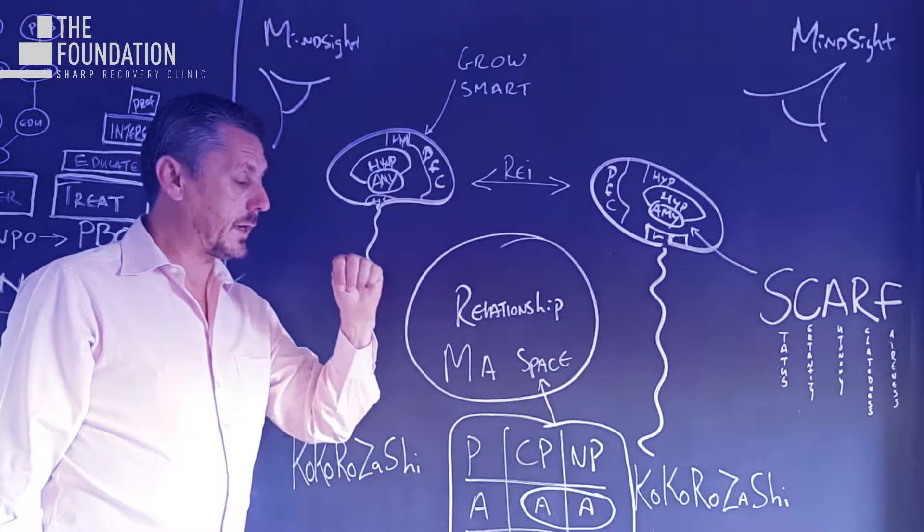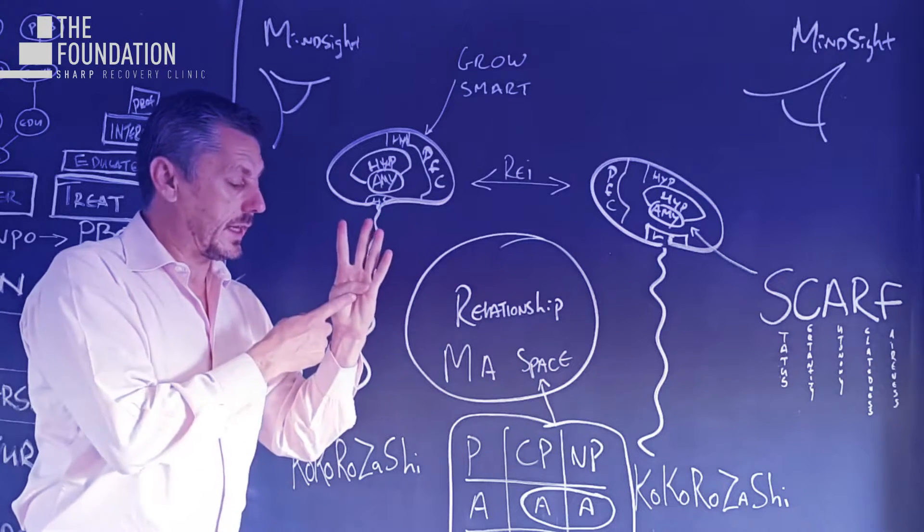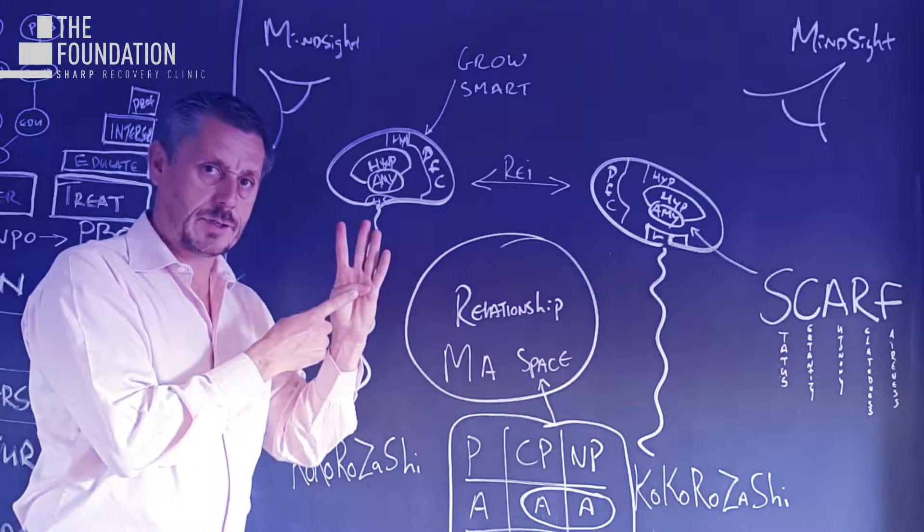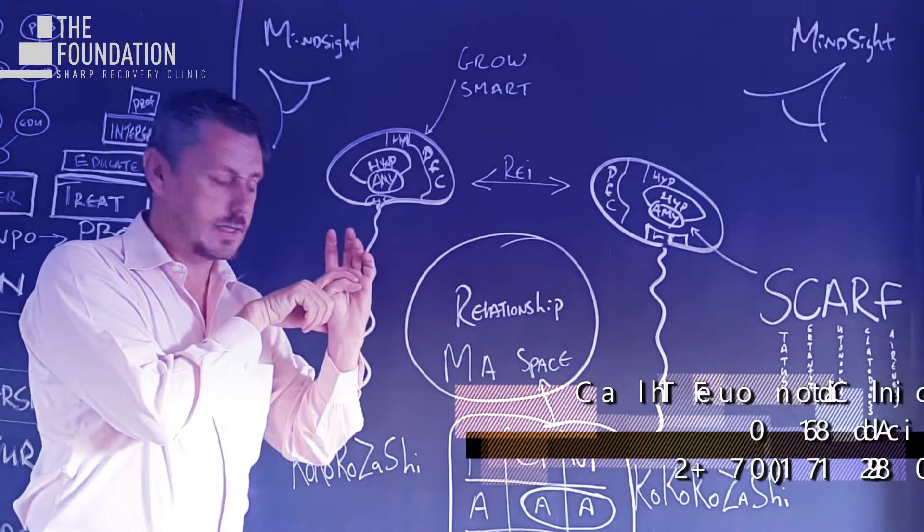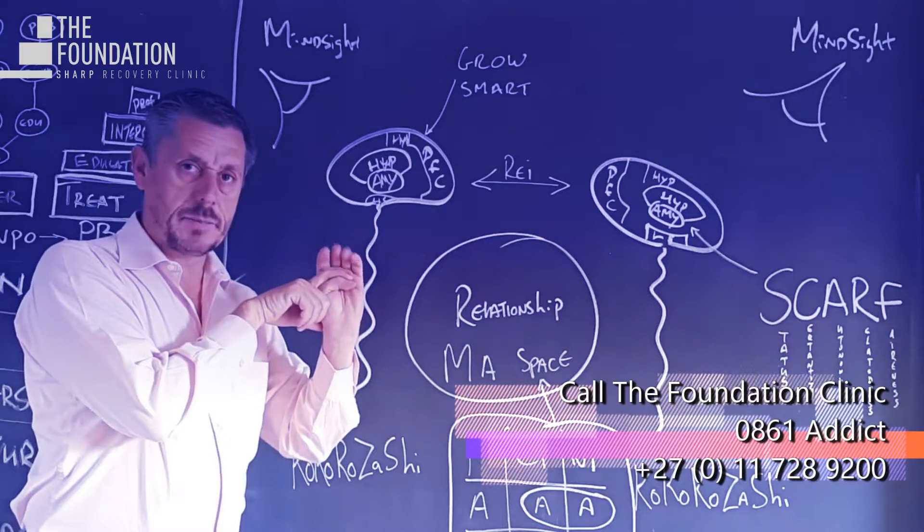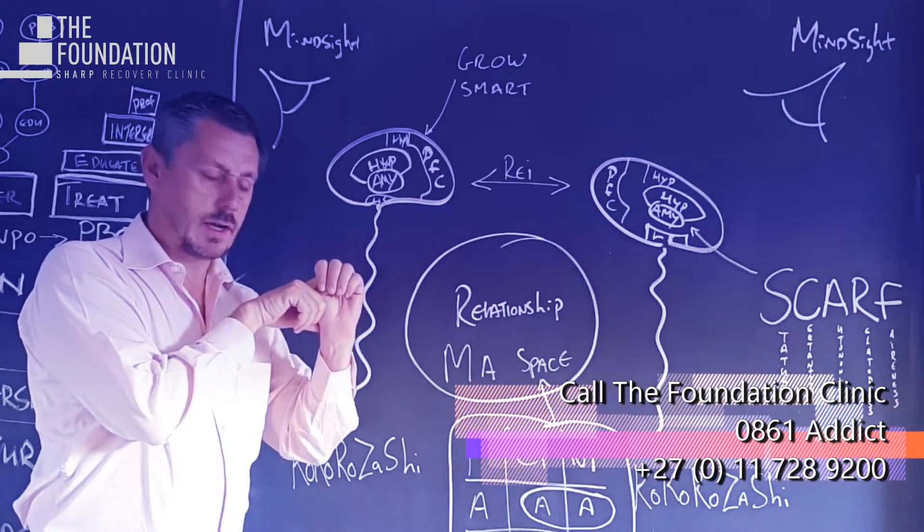That's the mindsight model. When our clients are triggered, when there's amygdala response, how to calm them down so we can put in a new response into the hippocampus so that when clients go out there and get triggered, they're able to respond to a new behavior.